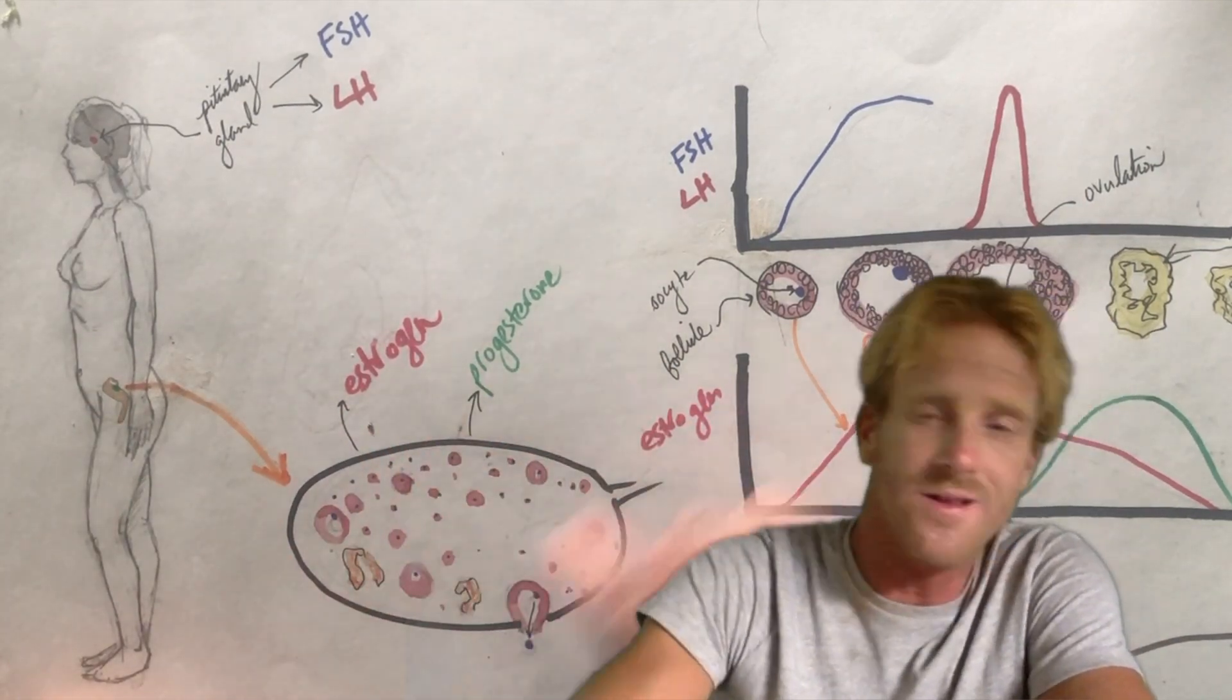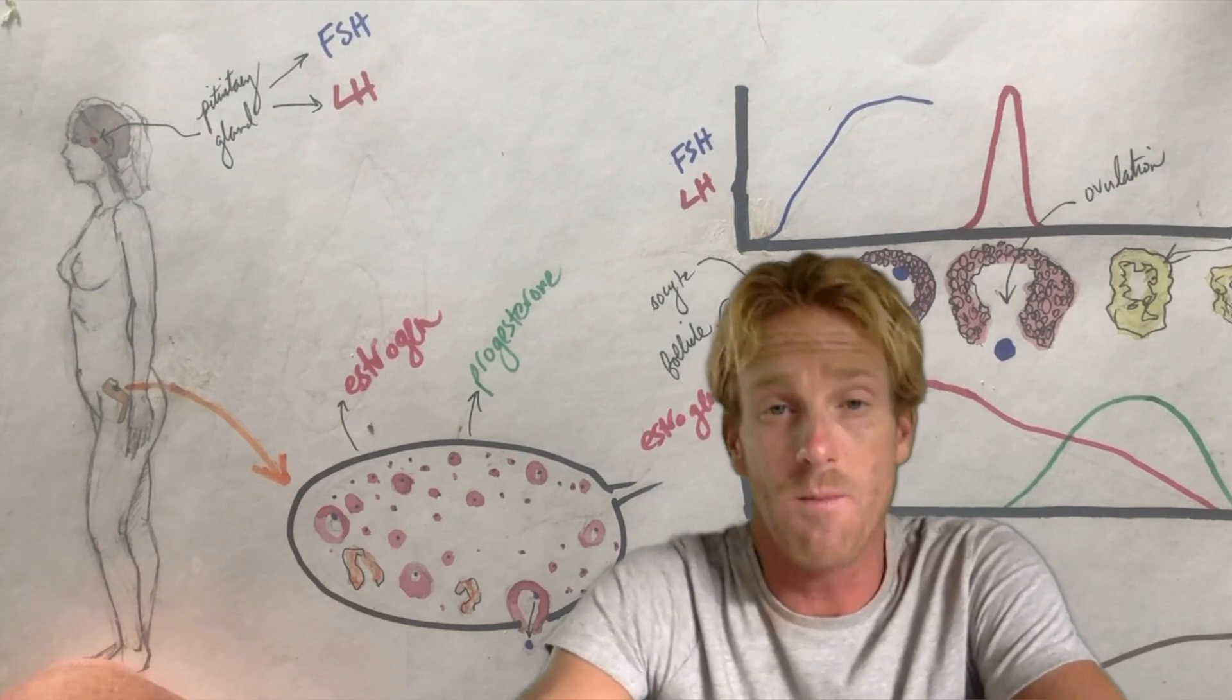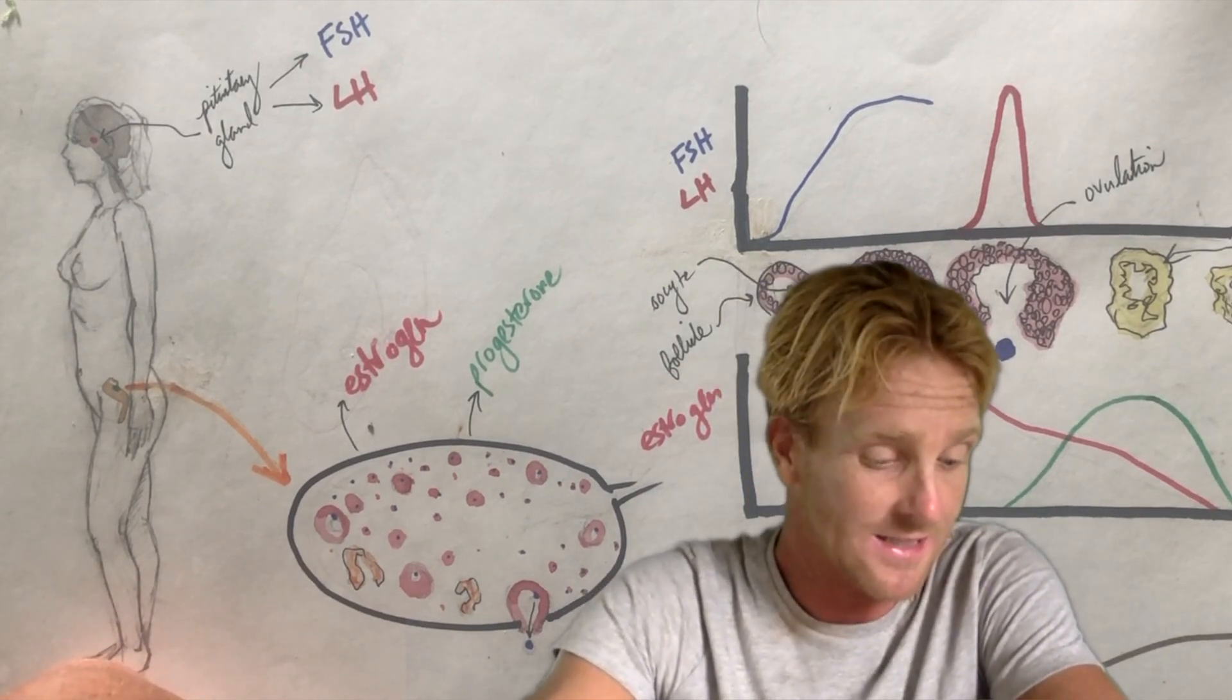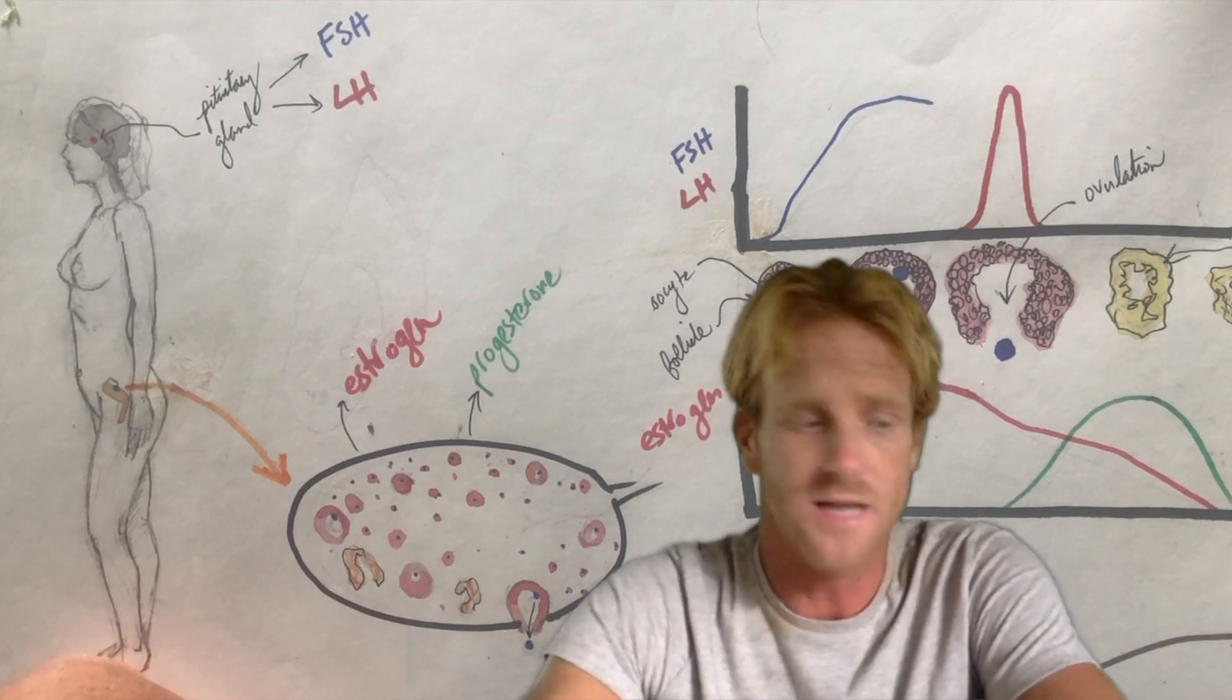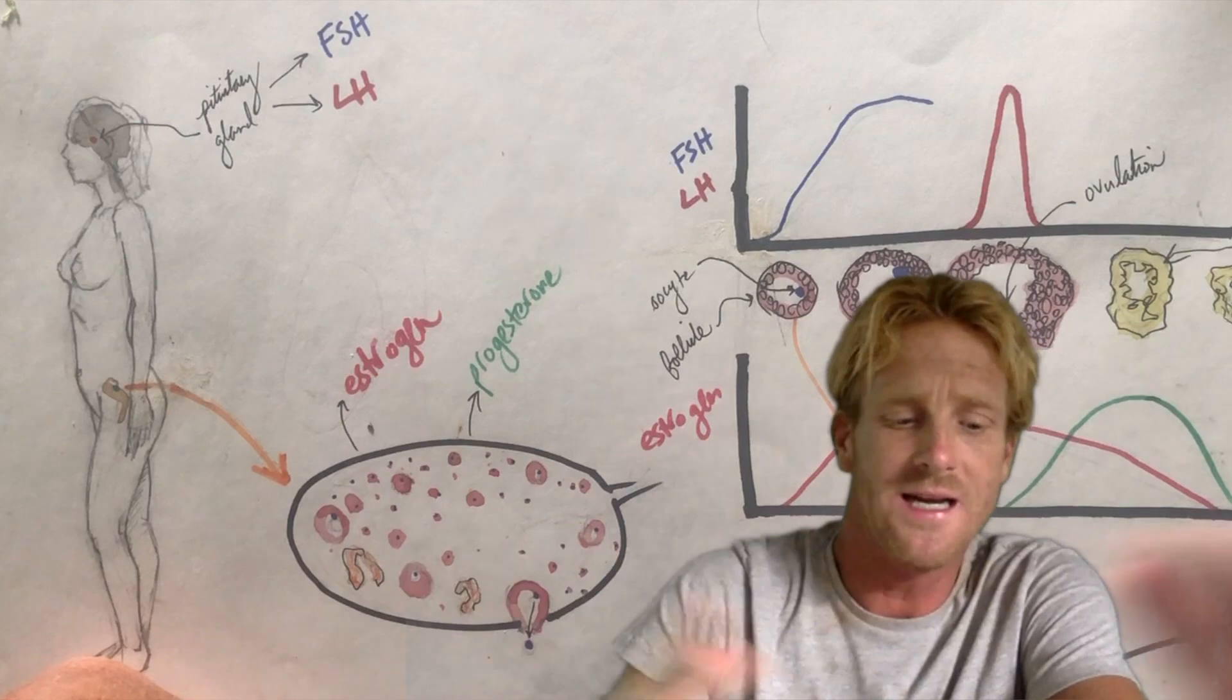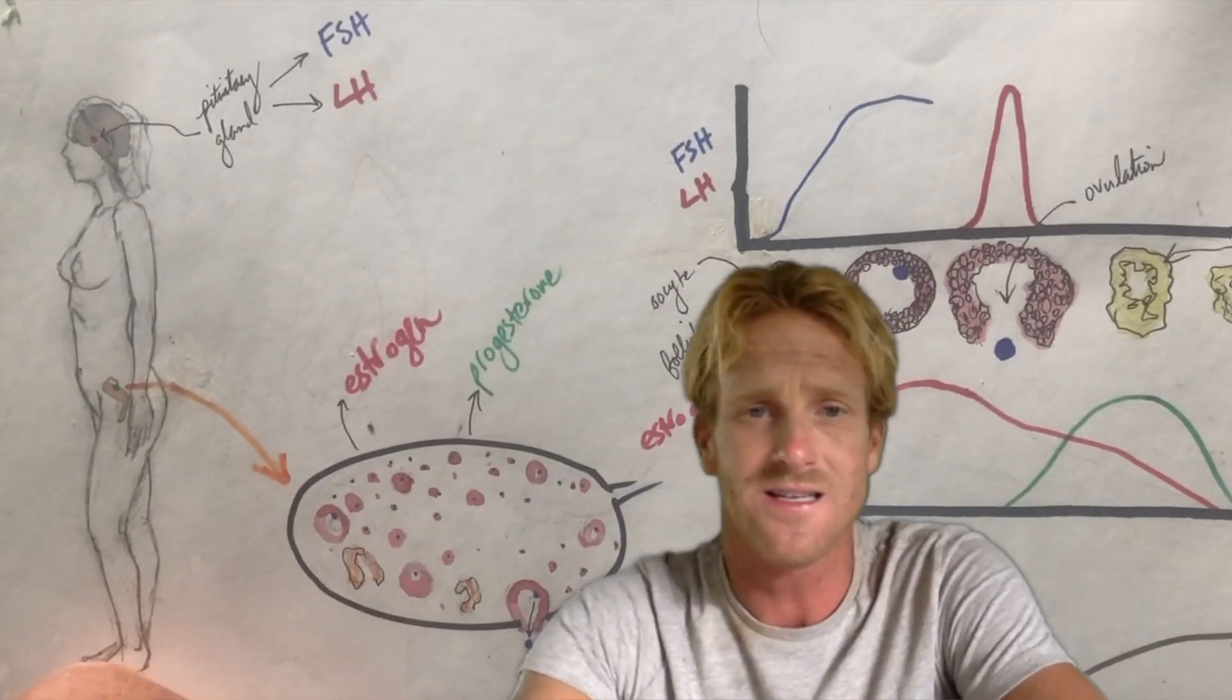If we zoom in on the ovary, this is the place in which all of these immature eggs or oocytes are made and developed. There's a bunch of these eggs in here. Before a female is born, there's about 7 million of these oocytes. By the time she reaches reproductive age, 13, 14, it's down to about 200,000 because a lot of these died off.